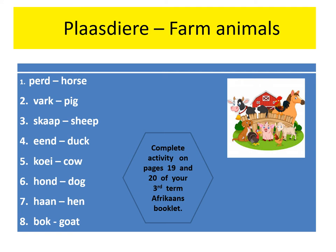Ant: Duck. Koi: Cow. Hunt: Dog. Haan: Hen. Bok: Goat. Please complete the activity on pages 19 and 20 of your third term Afrikaans booklet.